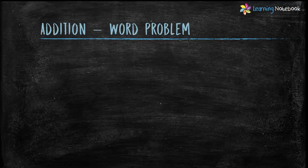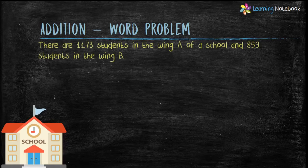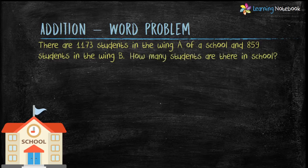Now let's see how to solve word problems related to addition. The question is: there are 1173 students in Wing A of a school and 859 students in Wing B. How many students are there in the school? Let's first understand the problem and recognize that we need to find the total number of students, so it is a clear case of addition.